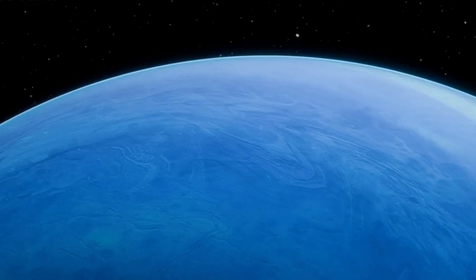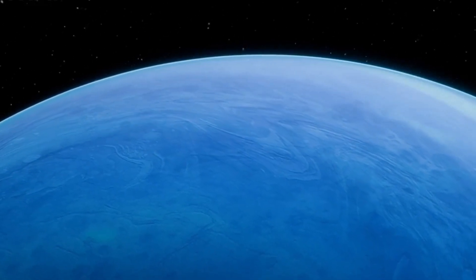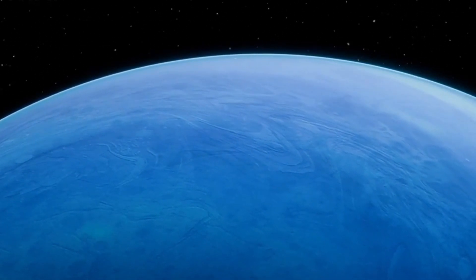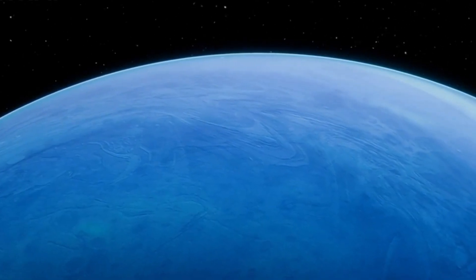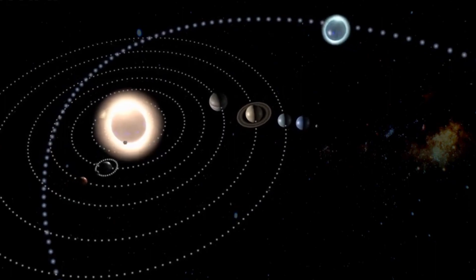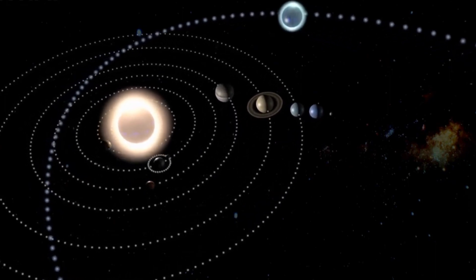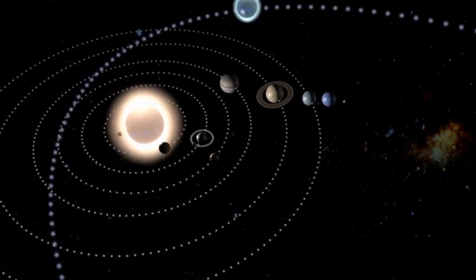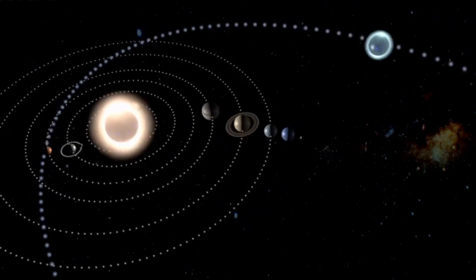At 13 times the mass of Earth, it's nearly the size of Neptune and sits about 50 light-years away in the Hercules constellation. Despite orbiting close to its star, completing one year in just four days, this mysterious planet has scientists rethinking how planets form.